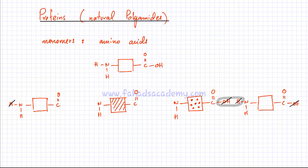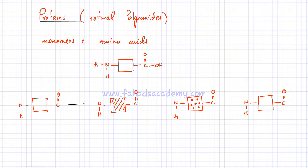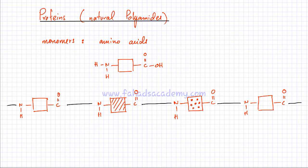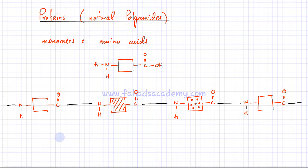This results in an amide linkage. This C goes and bonds with the N from the other monomer, and there are continuation bonds on both sides. This is your amide link — also called a peptide link in biology. It's the same as a polyamide: C double bond O followed by NH, C double bond O followed by NH. In biology, this is called a peptide linkage.